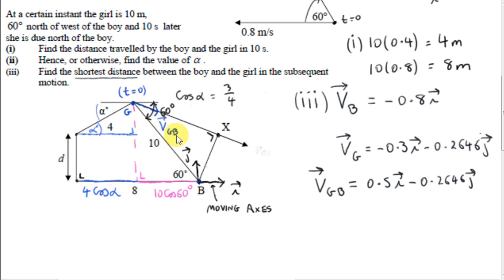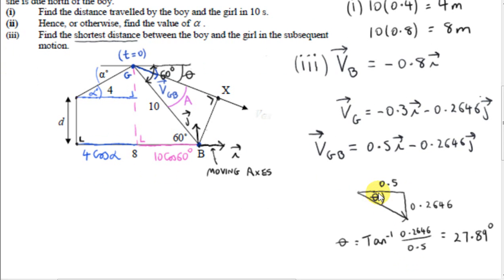Since vector VGB is fully specified, we can get the angle between vector VGB and the x-axis. Let's call this angle theta. So, here I'm showing vector VGB and the magnitude of its two components. We can work out this angle here, which I'm calling theta, by getting the inverse tan of 0.2646 over 0.5. That's 27.89 degrees.